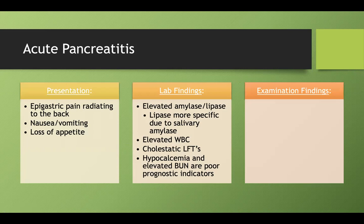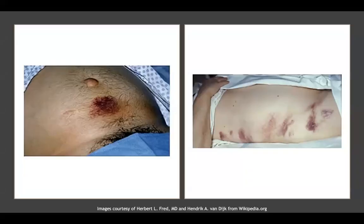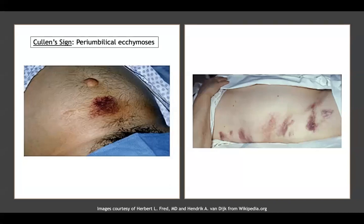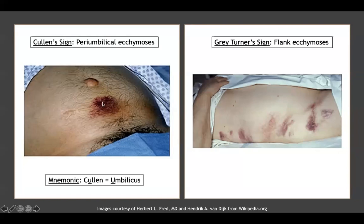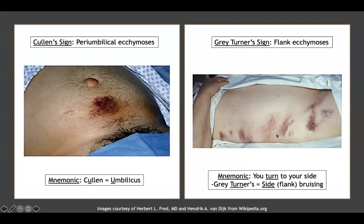On examination, note abdominal tenderness plus two classic signs: Cullen's sign (peri-umbilical ecchymosis — remember 'colon' for umbilicus) and Grey-Turner's sign (flank ecchymosis — remember 'you turn to your side' for flank bruising). Both signs indicate retroperitoneal hemorrhage from severe pancreatitis.